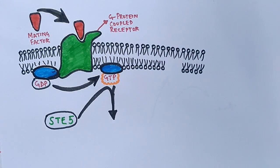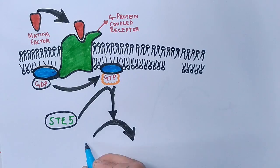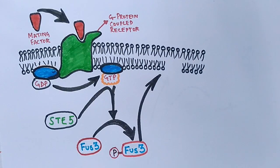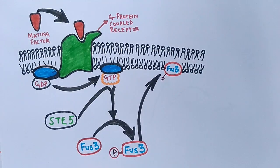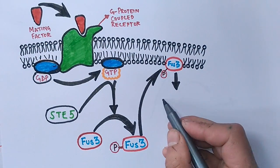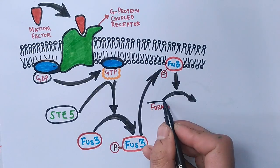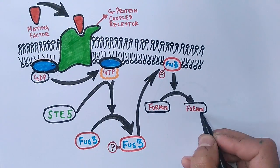The first protein to be phosphorylated is the FUS3 protein. The phosphorylated FUS3 protein moves to the plasma membrane, and here at that site, the FUS3 protein phosphorylates the formin protein, thus activating the formin protein.